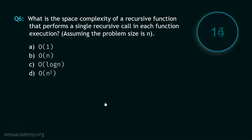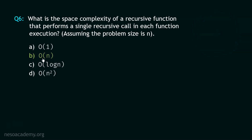And your time starts now. Stop. The correct option is option B: O(N). We have been told to find the space complexity of a recursive function that performs a single recursive call in each function execution. If we assume the problem size is N, then O(N) will be the space complexity because the depth of recursion will be N. Now let's move to question number 7.